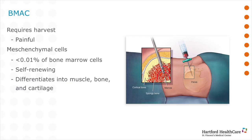Bone marrow aspirate concentrate is obtained through a bone biopsy, often from the hip crest. This can be quite painful. The aspirated bone marrow is separated with a centrifuge and the layer containing stem cells is isolated for injection into the joint. These cells have regenerative potential and can create and differentiate into muscle, bone, or cartilage cells.